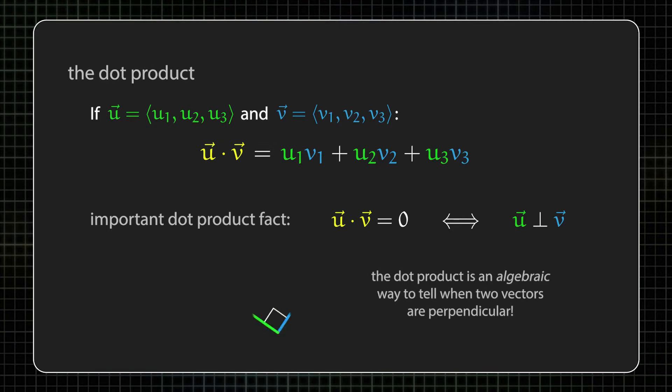So if two vectors form a right angle when you put their tails together, then their dot product is zero, and vice versa.